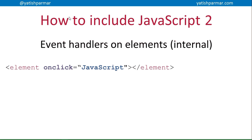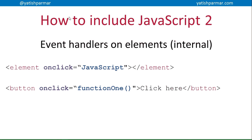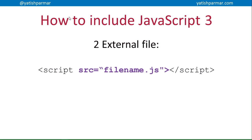For each of these I'm just showing a quick overview, and in the next video when going through different code examples you'll see these in action. Instead of putting the JavaScript directly inside the quotation marks, you can call a function — for example, a button with onclick calling a particular function that needs to be executed when that button is clicked. I'll be making quite a lot of use of that event handler.